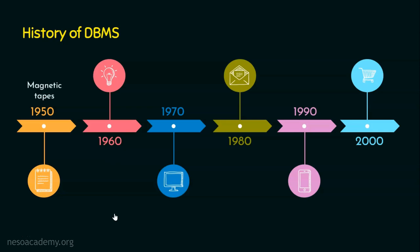In the 1950s and early 1960s, magnetic tapes were used for storing data. For example, payroll processing was automated with data stored on magnetic tapes. This involved reading data from one or more magnetic tapes, and these magnetic tapes were sequential in terms of data access, so we cannot access any data directly.